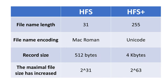The two file systems differ by the following. File name length: in HFS 31, in HFS Plus 255. File name encoding: in HFS MacRoman, in HFS Plus Unicode. Record size: in HFS 512 bytes, in HFS Plus 4 kilobytes. And the maximum file size has increased from 2 to the 31st in HFS to 2 to the 63rd in HFS Plus.